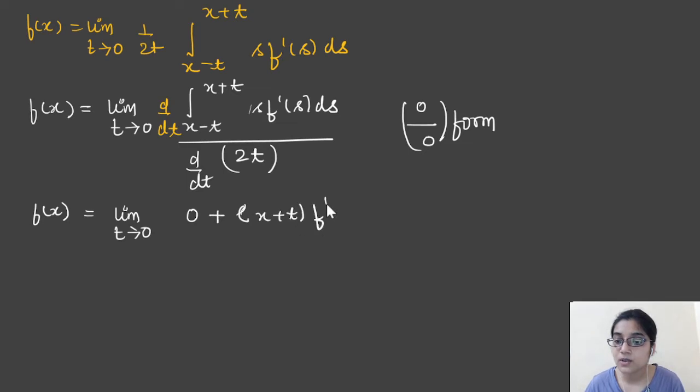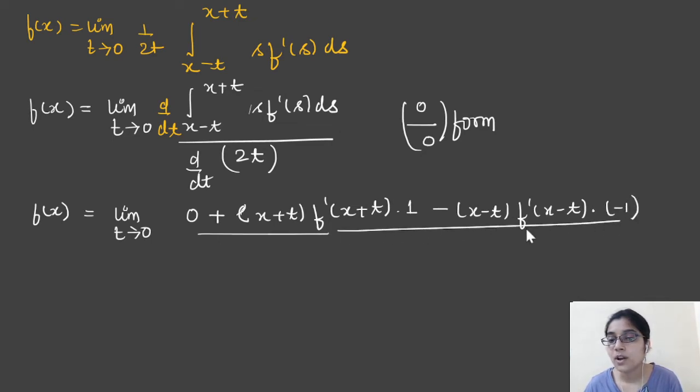Replace s with the upper limit, which is x plus t. This is your f' of x plus t. And what is the differentiation with respect to t? It's 1, because we will take x as a constant. Then minus, we will replace with the lower limit x minus t. Differentiation of x minus t with respect to t gives us minus 1. And here in the denominator is 2. I gave this on purpose because I recently taught you Leibniz rule, so I was checking how many of you actually understood the concept.